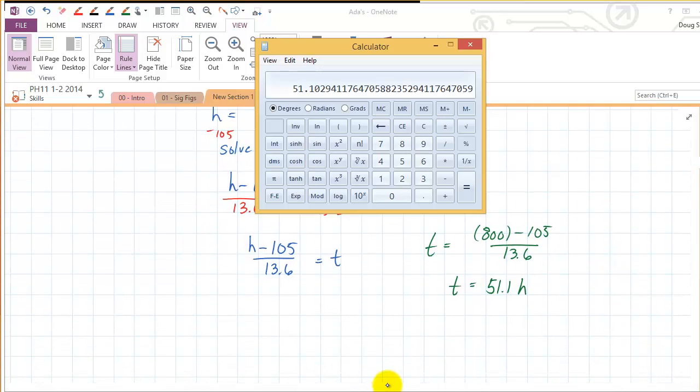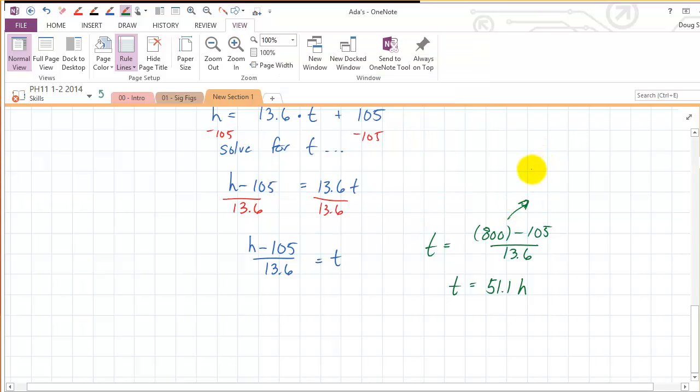And you notice I've rounded this to three significant figures. I could actually even write this again using units just to show that it would work if you kept your units in there. So that's 800 meters minus 105 meters over 13.6 meters per hour. So that gives me units of meters divided by meters per hour. So that's like this kind of thing. Those cancel out, and that puts the hour in the numerator. So anyways, that's just another review of working with functions. All right. Thank you.